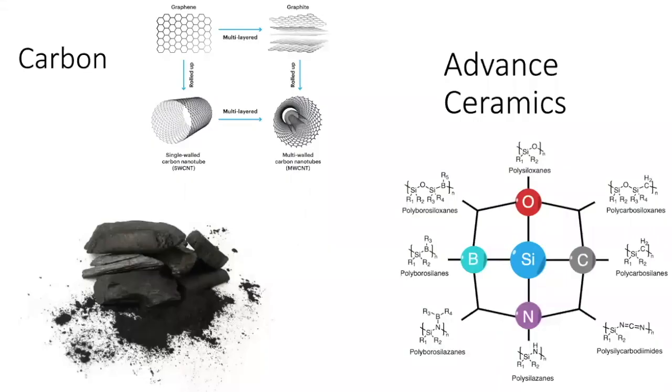For carbon, we have graphite, carbon nanotubes, and diamonds. Advanced ceramics are ceramics mixed with other materials like metal or polymers to create different composite structures.